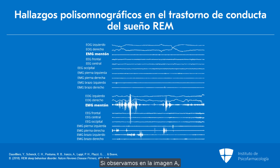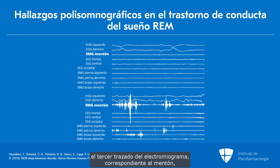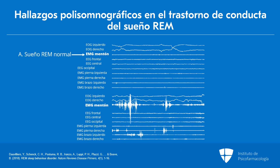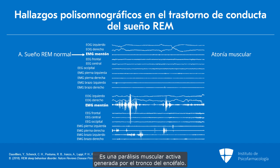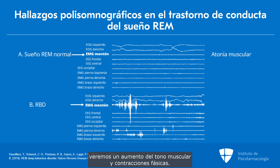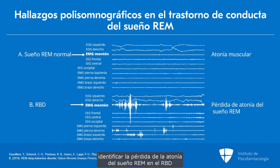In the figure shown here, in the top panel A, if you look at the third tracing for the chin electromyogram, this is the chin EMG of normal REM sleep, and you will see a flat line indicating muscle atonia — an active muscle paralysis generated in the brainstem. In contrast, in panel B, if you look at the chin EMG, you see increased muscle tone and phasic twitching. This is abnormal, and this is what's found with REM sleep behavior disorder. It's really easy to pick up the loss of REM atonia with RBD in contrast to normal REM sleep atonia.